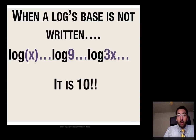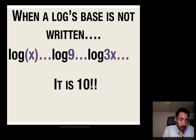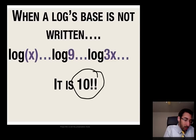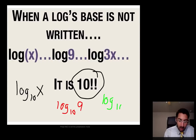First off, when a log base is not written — you can encounter that in your homework today with log x, log 9, or log 3x — when you don't have a base written down, it's always going to be 10. So whenever it's not written down, we can just assume it's 10. For example, log x would be log base 10 of x, log 9 would be log base 10 of 9, and log 3x would be log base 10 of 3x. So if it's not written, assume that it's 10.